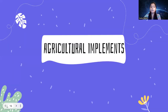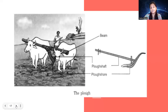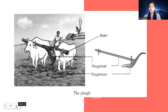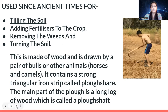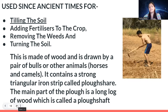For crop production we need agricultural implements. The most important is the plough, also called the hull. It has a plough shaft, a plough share, and a beam which supports and attaches the humus. The plough has been used since very ancient times for tilling the soil — that is, for loosening the soil from the top — and for adding fertilizers.